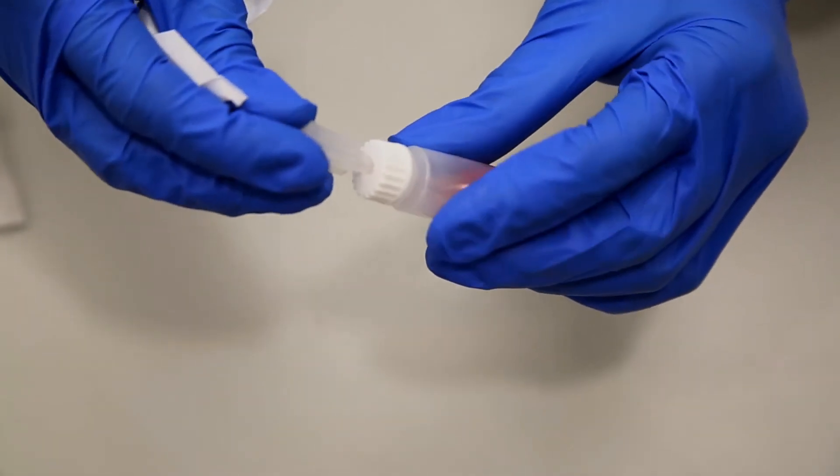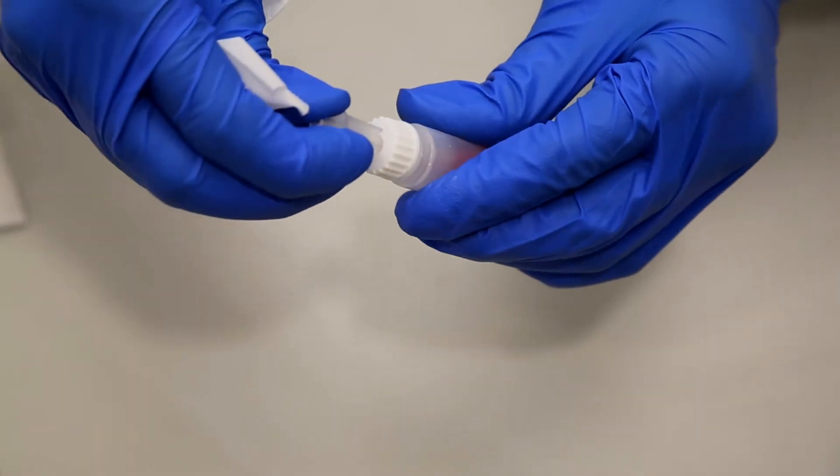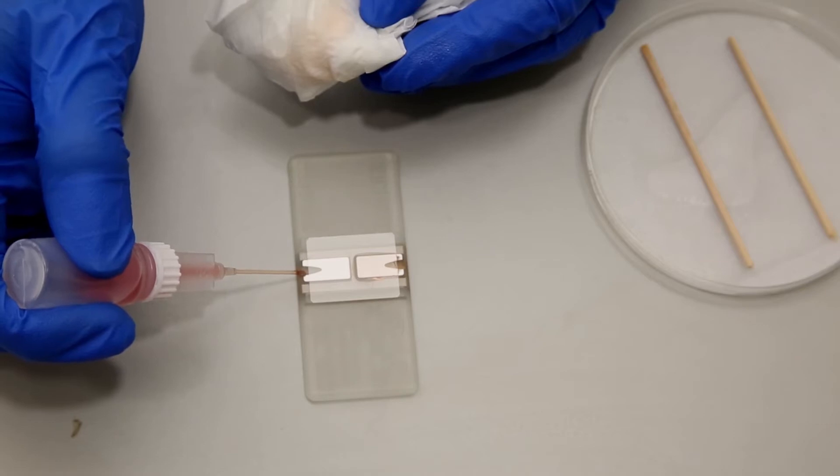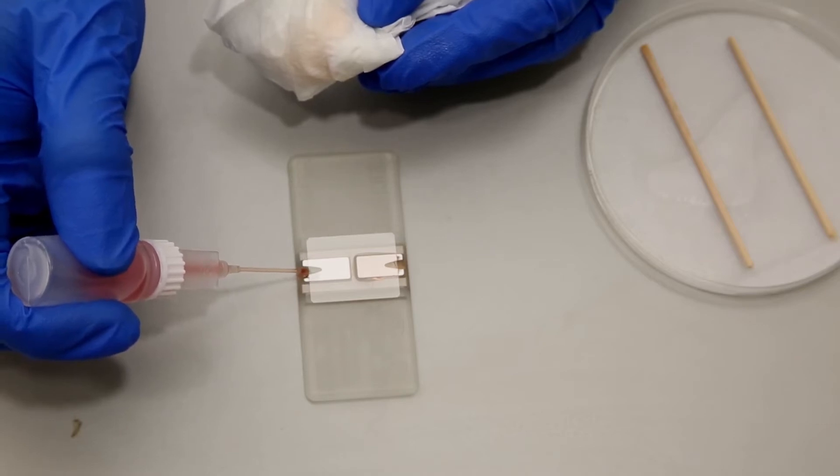Whole blood is added to the diluent, which lyses the erythrocytes while preserving leukocytes and platelets. When lysing is complete, the diluted blood is loaded into the hemocytometer for counting.